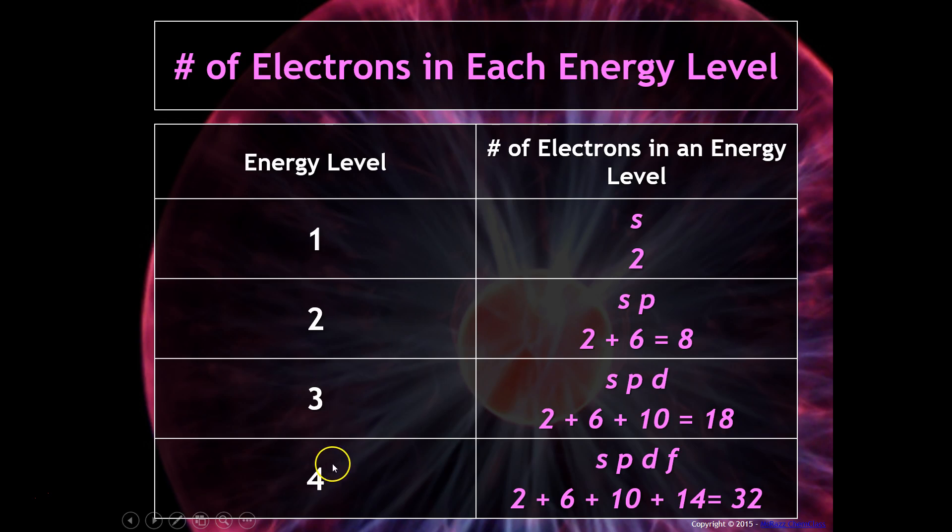Energy level four has s, p, d, and f. The s always holds two, p always holds six, d always holds ten, and f always holds fourteen, for a total of thirty-two electrons that can fit in that energy level.